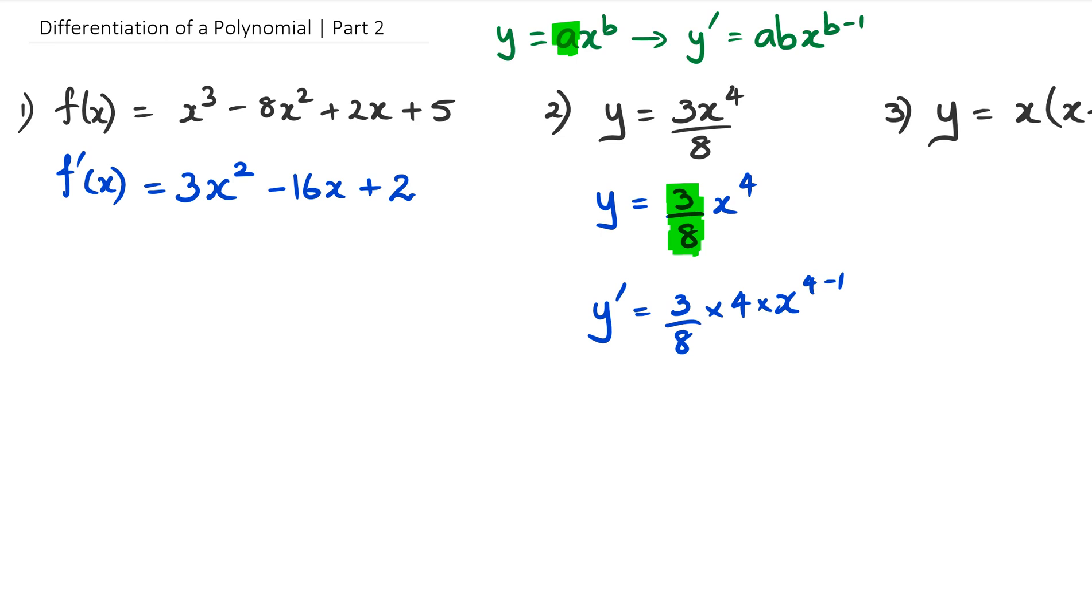So now when I differentiate it, I'm going to get y dash is equal to 3 over 8 multiplied by 4 multiplied by x to the power of 4 take away 1, same rules as what it was before. So in this case, we're going to get 3 times 4 which is 12, so we're going to get 12 over 8 x to the power of 3.